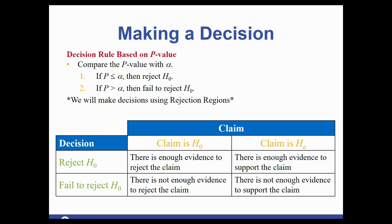Making a decision: there are two different methods of doing hypothesis tests — using a p-value, where you compare your p-value to the given level of significance, and using rejection regions, which we'll discuss more in the next section and will be our focus for most hypothesis tests.